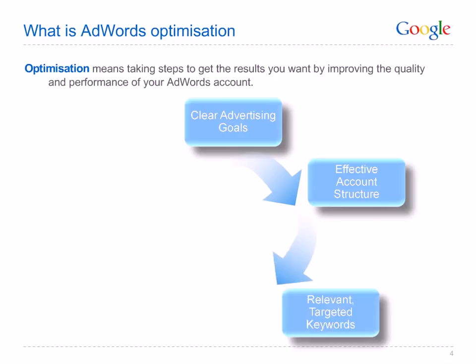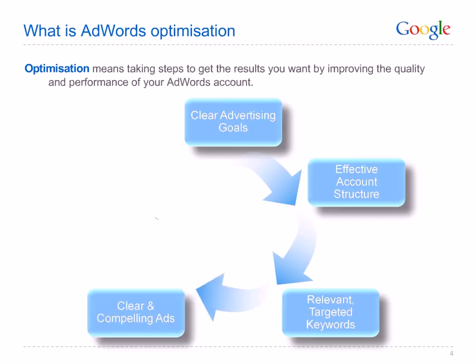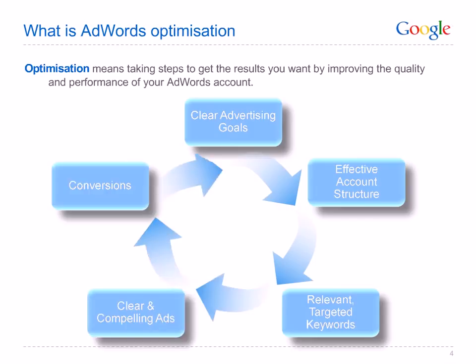Optimisation also involves improvements to your keyword list to make it more relevant, changes to keyword settings or to your bids, creating appealing and targeted ad text variations, as well as selecting the most relevant landing pages.